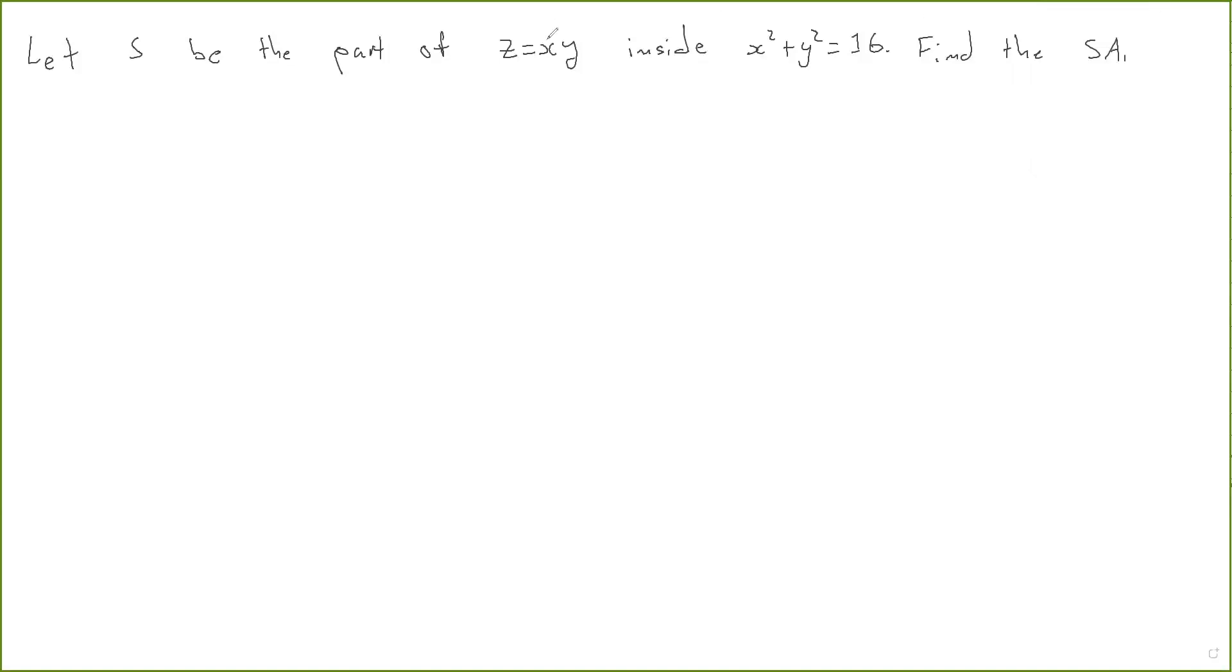Okay, so first of all, you might want to pause this and graph this in Geogebra or something. This is a saddle and we want the part that's inside the cylinder. We want the surface area of that.